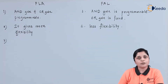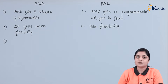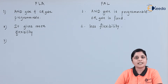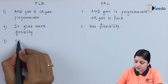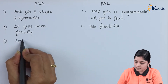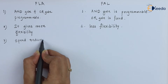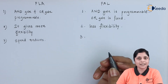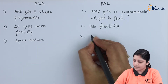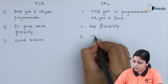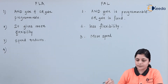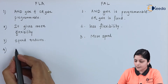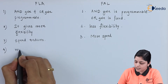The third point is about speed. In PLA, speed is reduced. In PAL, it gives us more speed to get the output.